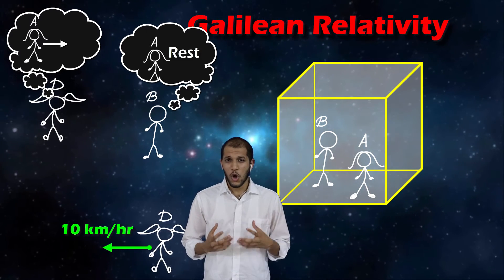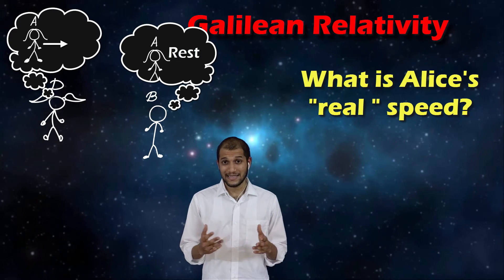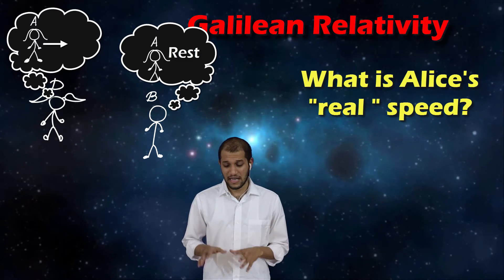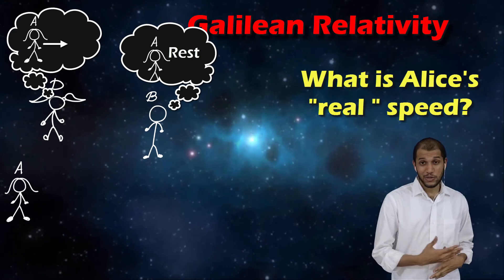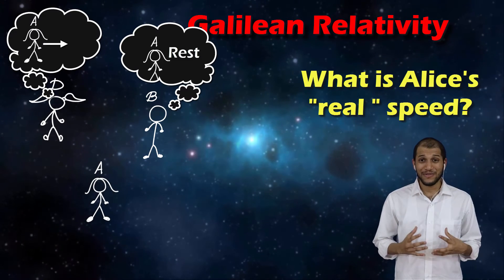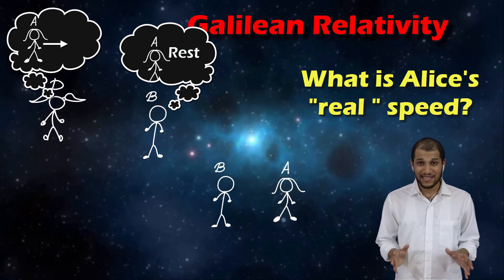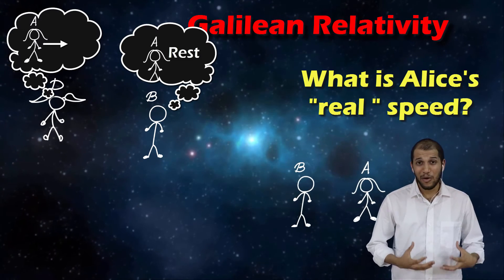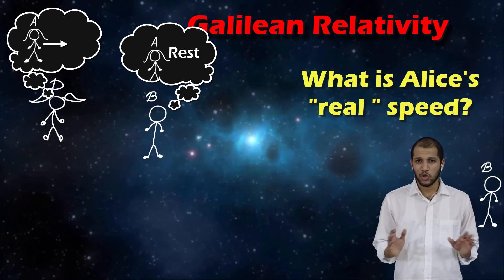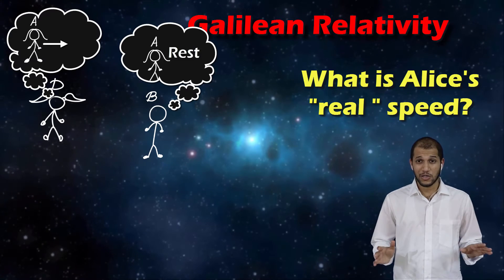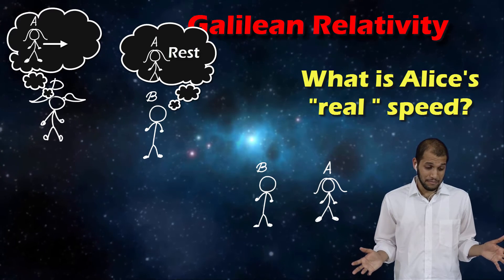So now here's the question. Who is right, or what is Alice's real speed? Is she really moving towards the right as seen by Divya, or is she at rest as seen by Bob? Now I know you are inclined to say that really Alice is moving towards the right at 10 kilometers per hour, and the only reason she seems to be at rest from Bob's point of view is because they're both moving together at the same speed. But here's the thing — why should we think about Alice's speed from Divya's point of view? What made Divya so special? The universe doesn't care about who's observing. So Divya's point of view is as good as Bob's point of view, and since Bob says that Alice is at rest, then she must be at rest.